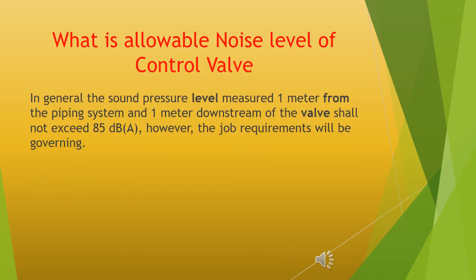What is the allowable noise level of a control valve? In general, the sound pressure level measured one meter from the piping system and one meter downstream of the valve shall not exceed 85 dB(A). However, the job requirements will be governing.